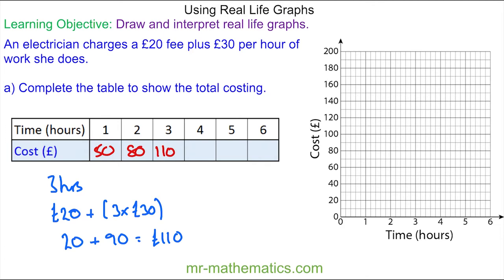And now we can see a pattern where we are adding £30 on for every increased hour. So this will be £110 plus £30, which is £140, and then £170, and then £200.